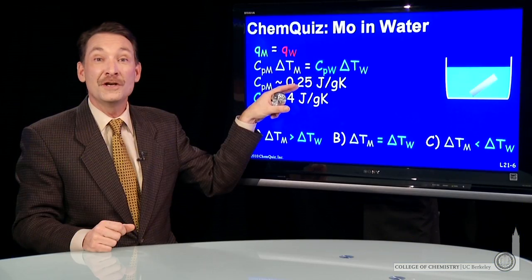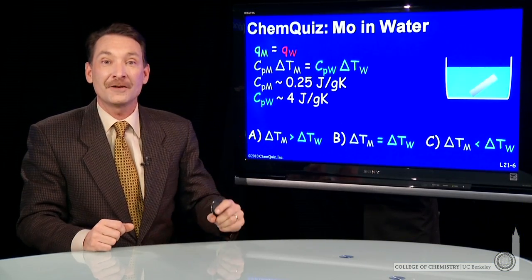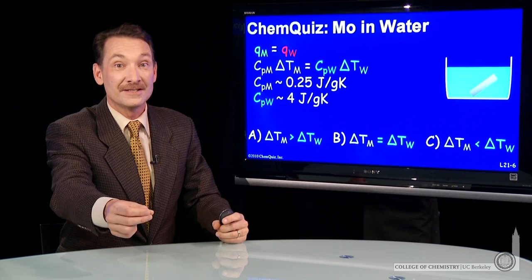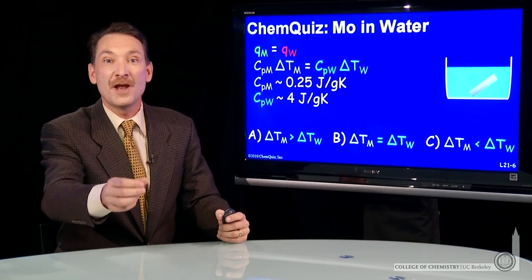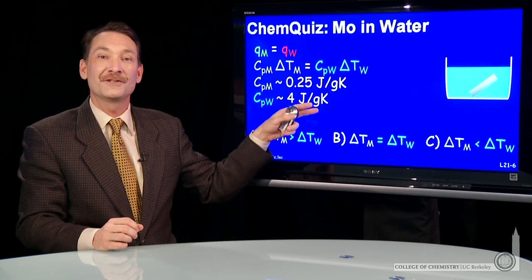So if one joule leaves the system, it could change the metal temperature by 16 degrees, but the water temperature by only one degree. That's the difference in heat capacities.